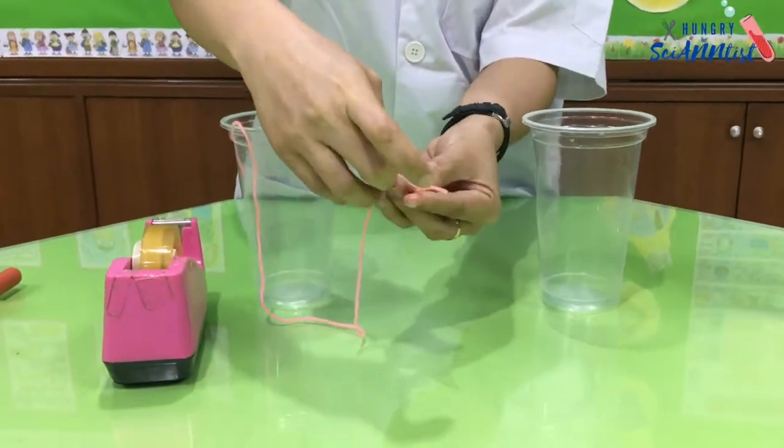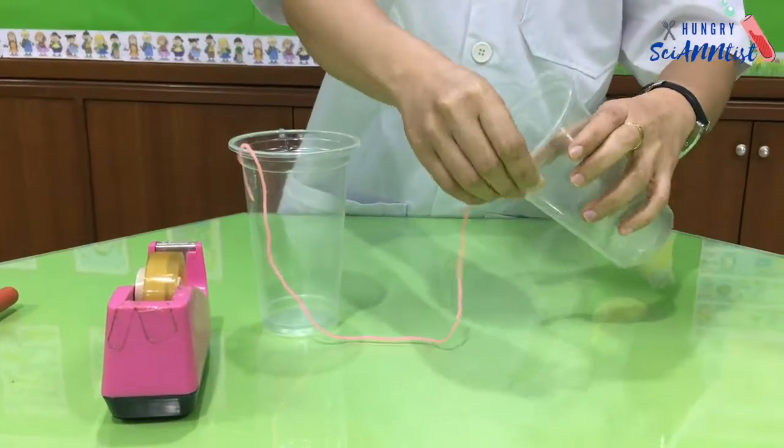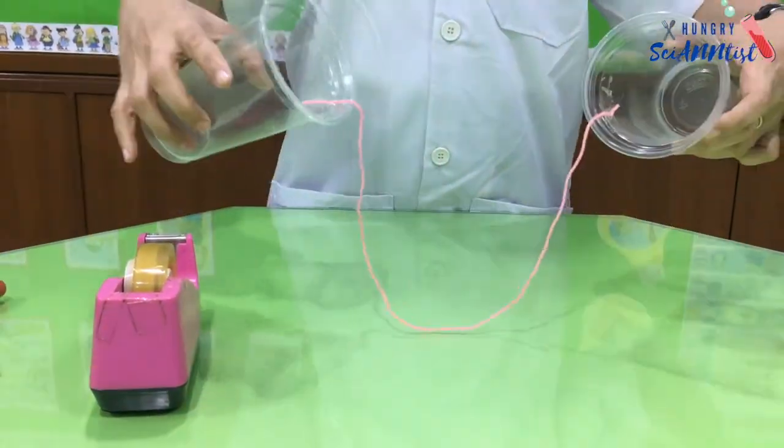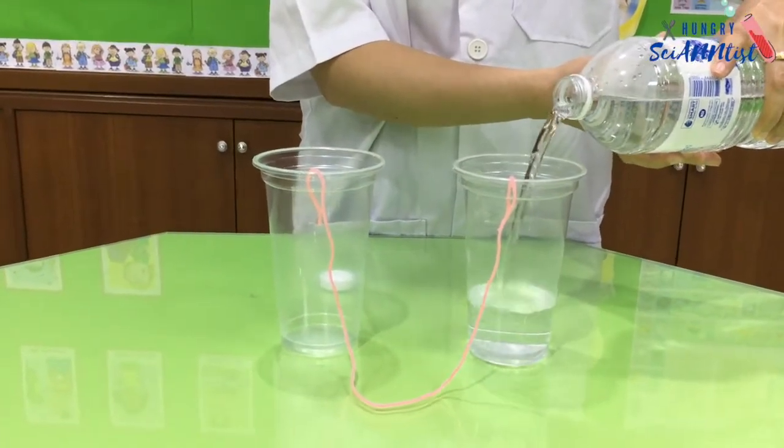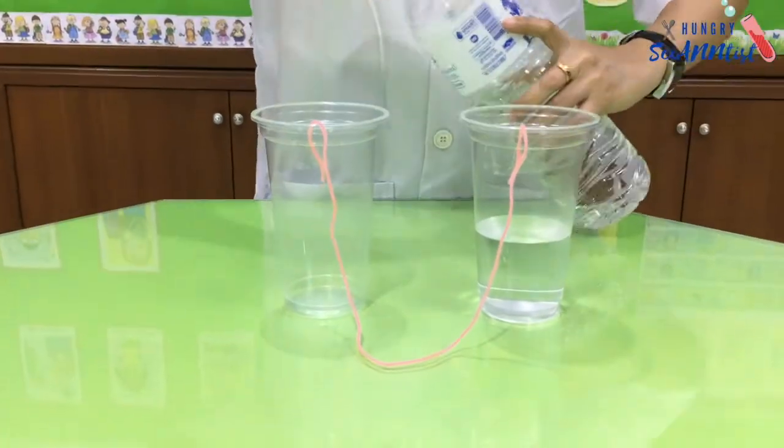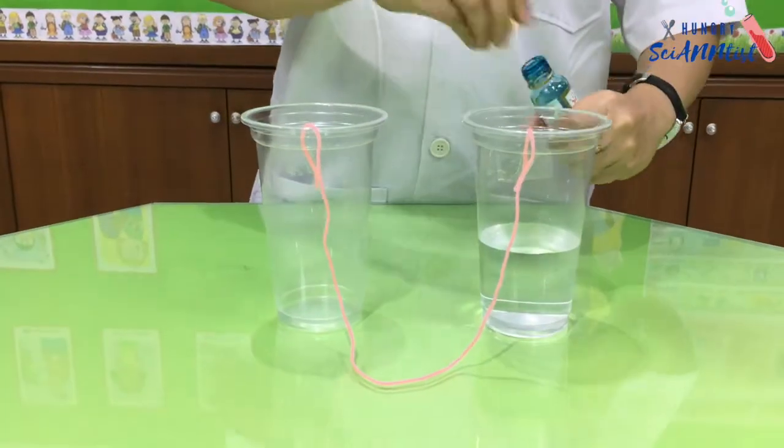Tape each end of the string inside the cup. Pour water. Food color is optional.